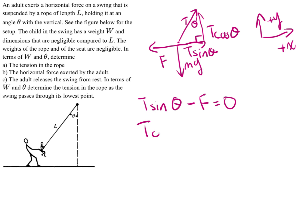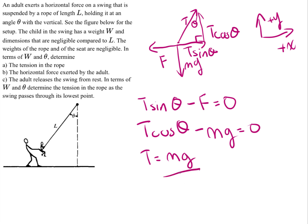The same thing goes for the vertical equation: tension times the cosine of theta minus the mass times gravity, mg, is also equal to 0.